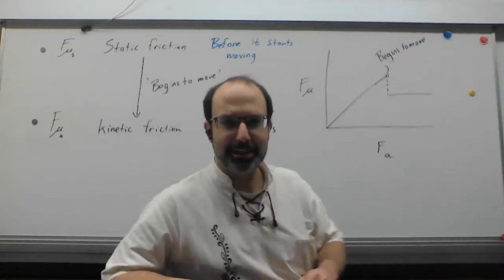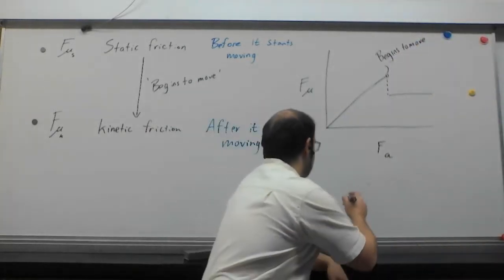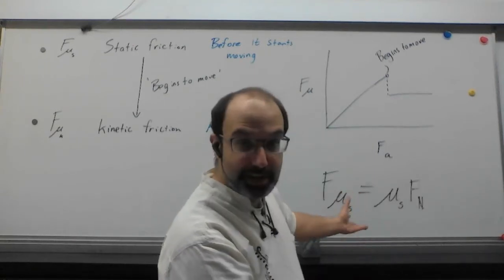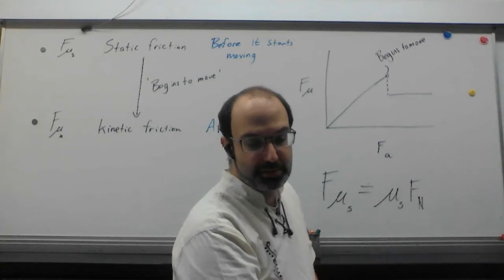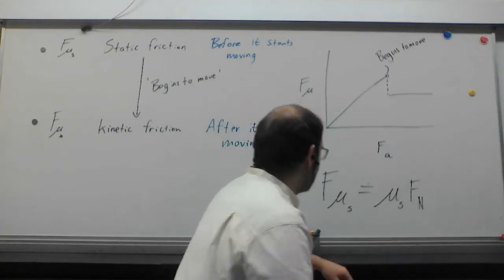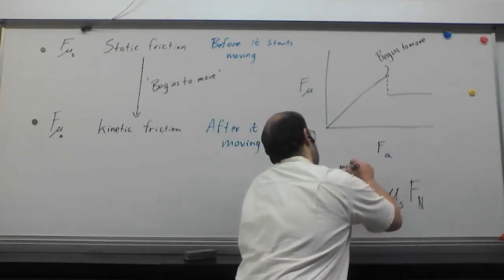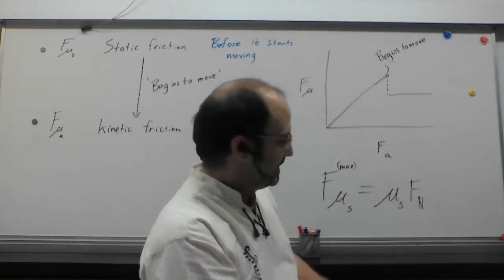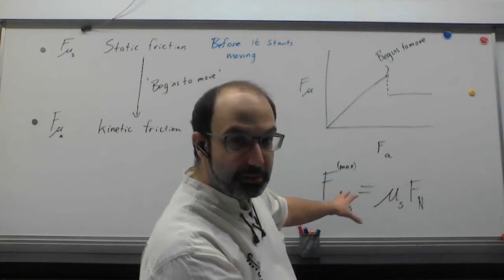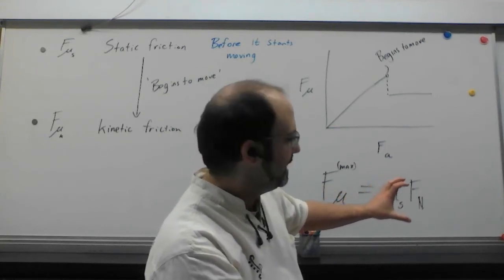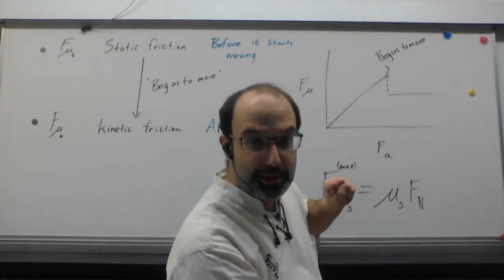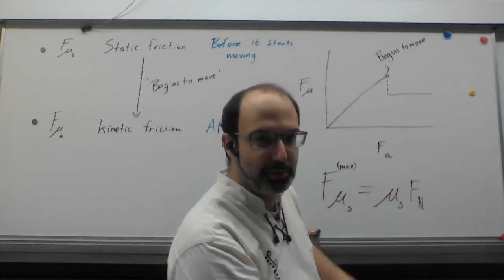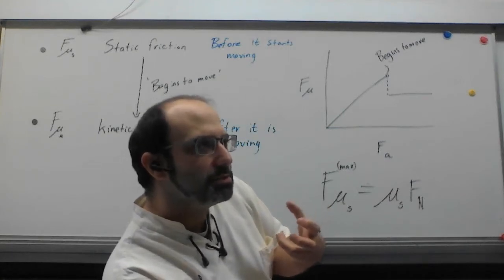Now, where that limit is, is from an equation. And that equation looks something like this. The first term is static friction, and it's going to be the limit for static friction. We could say max. This limit on static friction is found by taking the coefficient of static friction and the force normal. Now, the coefficient of static friction is represented by this mu, which is why we have a mu here.